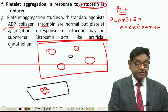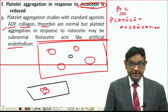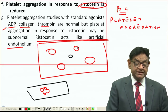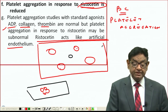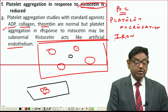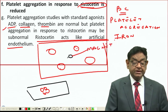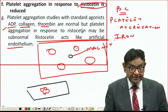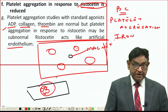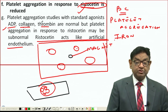Ristocetin acts like an artificial endothelium — remember that von Willebrand factor is released from endothelium. Think of the platelets like iron particles, and ADP, collagen, thrombin, or ristocetin act like magnets. Any one of them draws the platelets together into a clump. But in von Willebrand disease, the ristocetin magnet is not effective, while ADP, collagen, and thrombin remain effective.